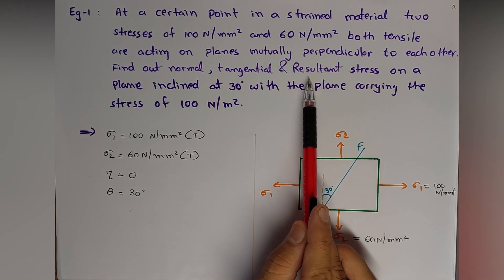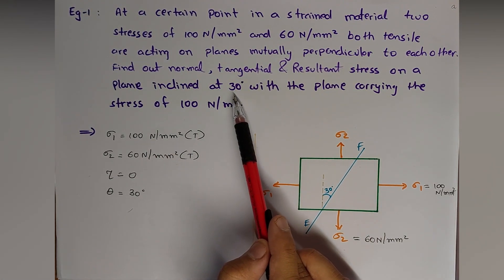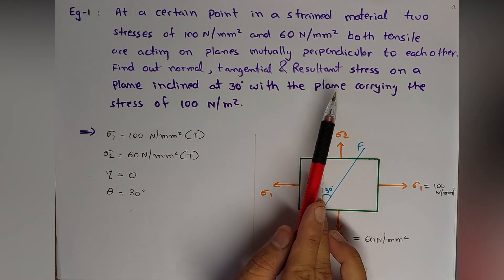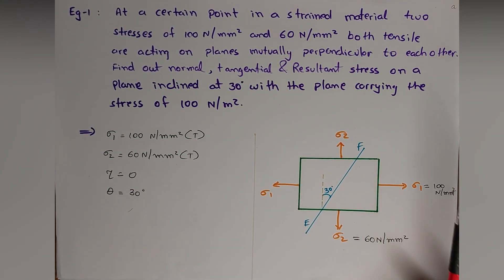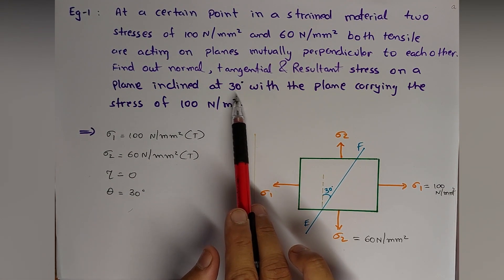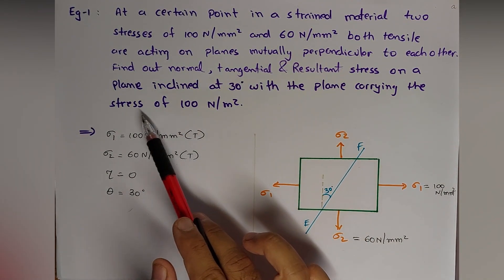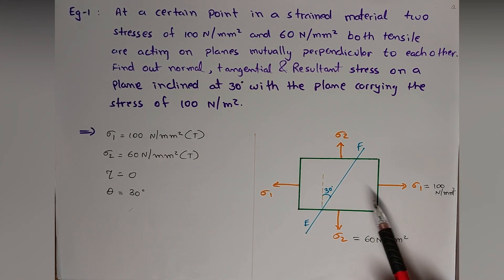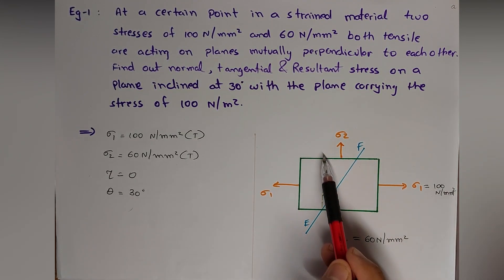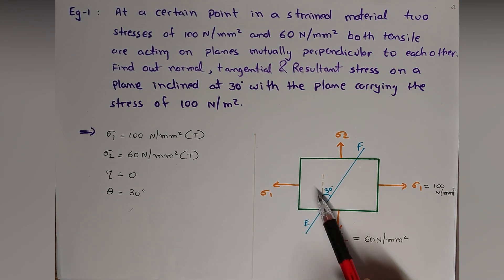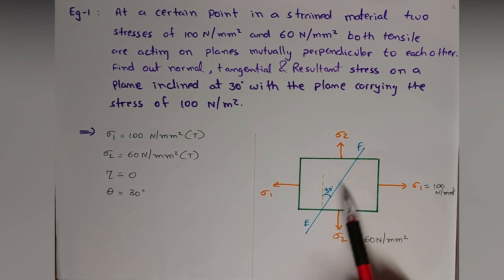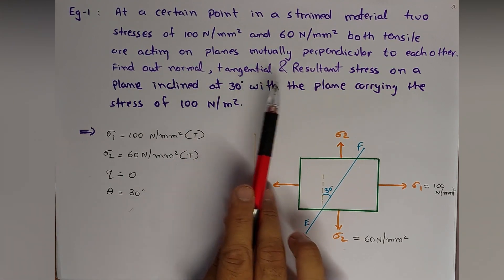We need to find the normal, tangential, and resultant stresses on a plane inclined at 30 degrees with the plane carrying the stress of 100 N/mm². The vertical plane carries σ₁ = 100 N/mm², and the oblique plane EF is inclined at 30 degrees. We need to calculate the stresses — normal, tangential, and resultant — on this plane EF.